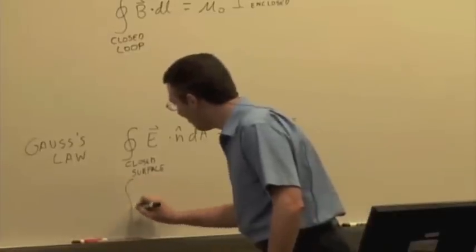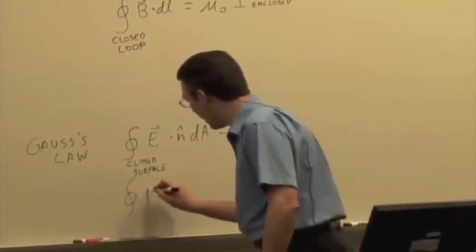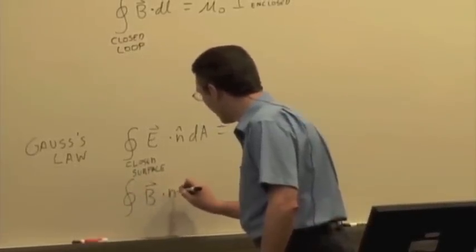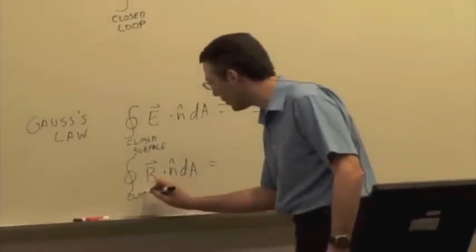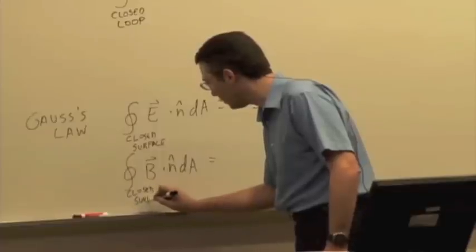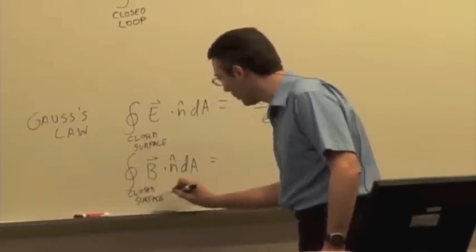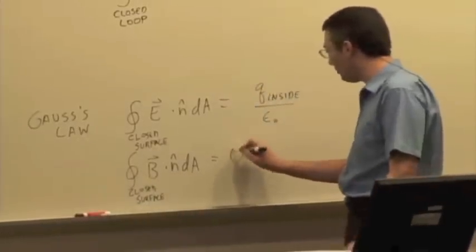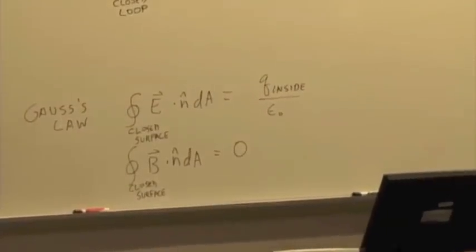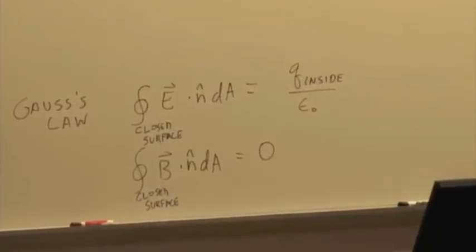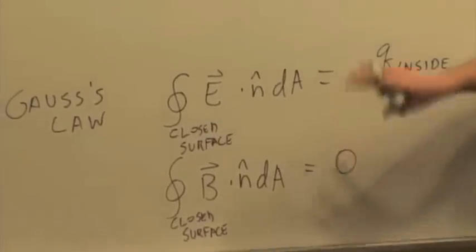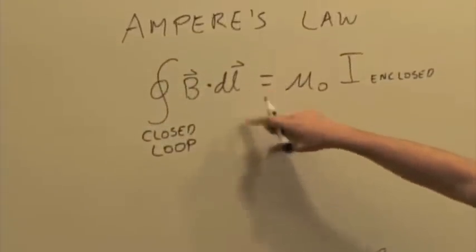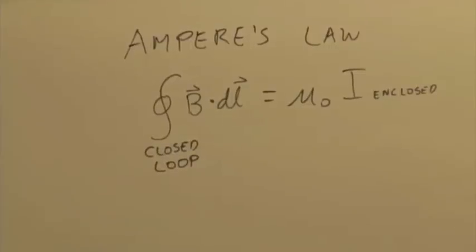We've had the magnetic version of Gauss's Law, which relates B dot N-hat dA — magnetic flux over a closed surface — to zero, since there aren't any magnetic monopoles, the net magnetic flux over a closed surface is zero. So we have three relationships: two of which have to do with area, and one has to do with a path integral over a length.